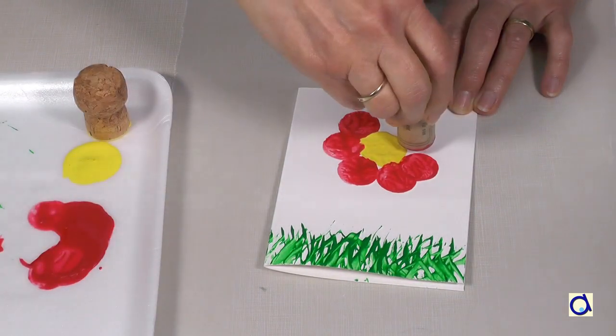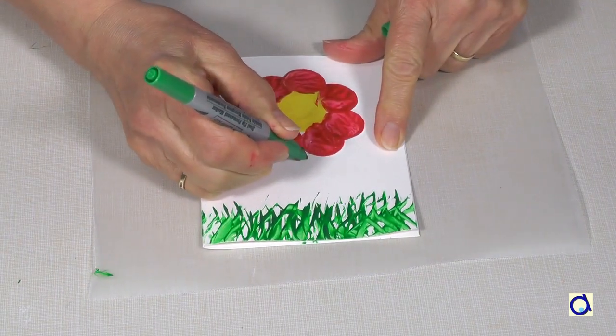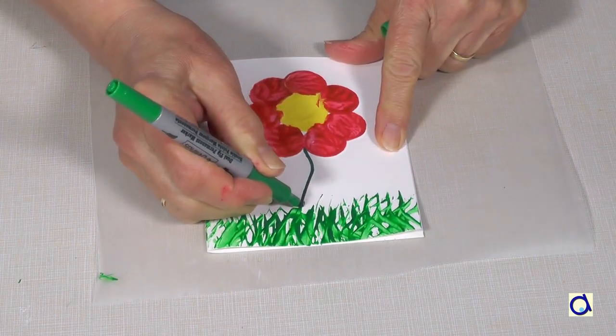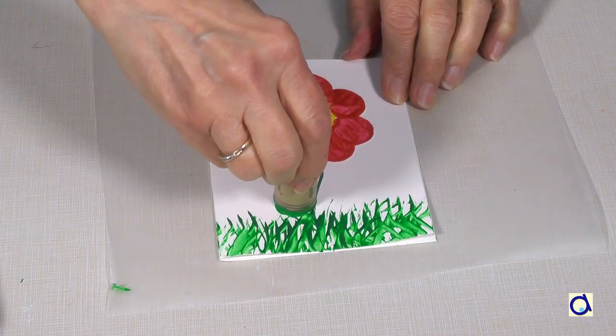Let dry. Take a green marker and trace the stem of the flower. Finally, dip a cork in green paint to make one or two leaves along the stem.